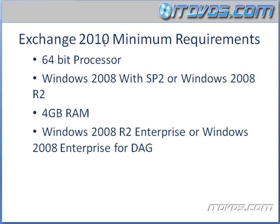The minimum requirements for our Exchange 2010 servers are going to be a 64-bit processor. The operating system needs to be Windows 2008 with Service Pack 2 or Windows 2008 R2. We need at least 4 gigs of RAM. And we need Windows 2008 R2 Enterprise or Windows 2008 Enterprise for database availability groups.